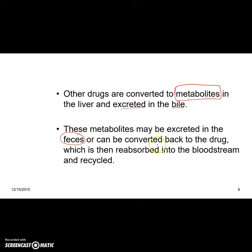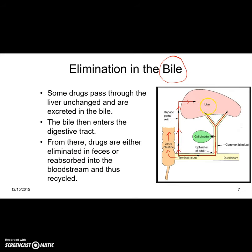Alternatively, metabolites can be converted back to the original drug, which is then reabsorbed into the bloodstream and recycled — as shown in this diagram. The bile goes to the duodenum, and the metabolites may be recycled through enterohepatic circulation or excreted by the feces.